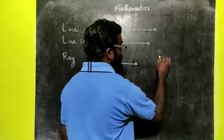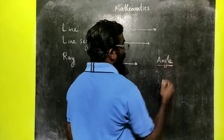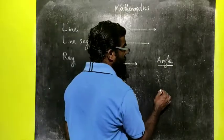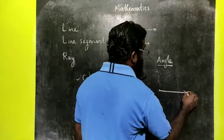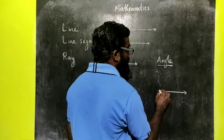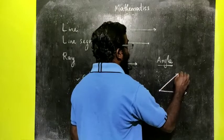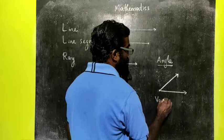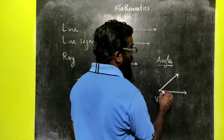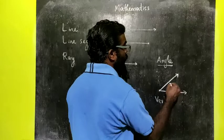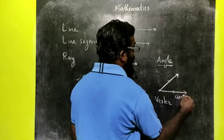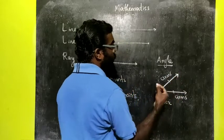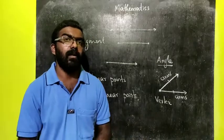Next one is angle. We know an angle is formed when two rays originate from the same initial point. Here I am going to draw two rays that are originated from the same point. This common point is called the vertex, and the rays forming the angles are known as the arms of the angle. This common point is called the vertex of the angle.